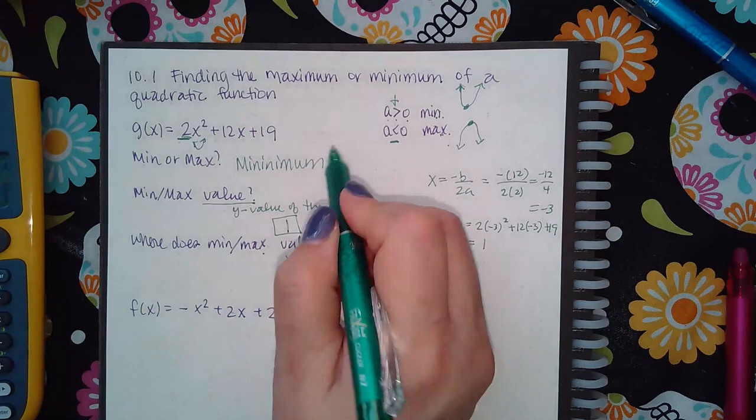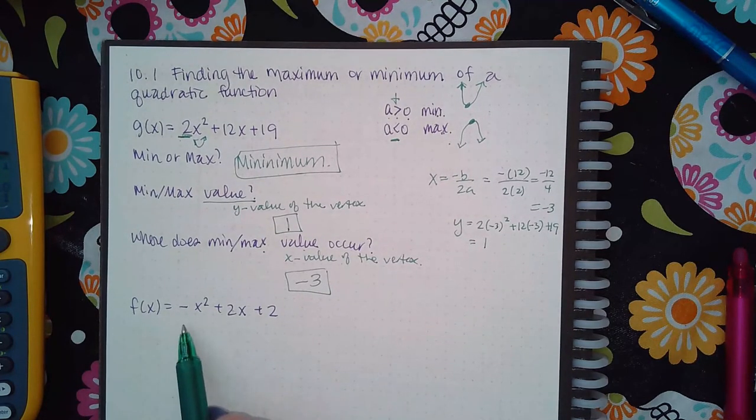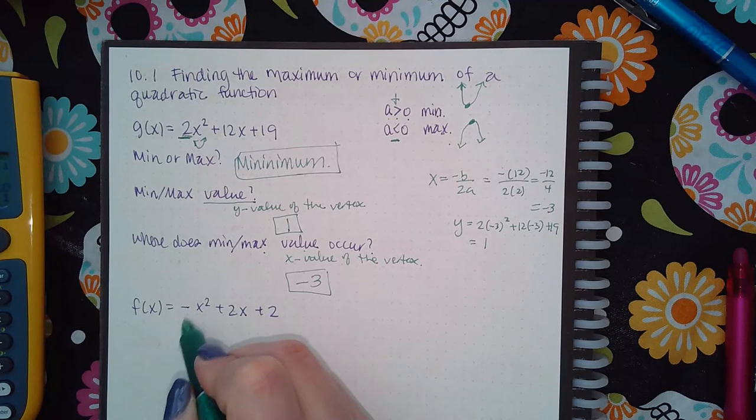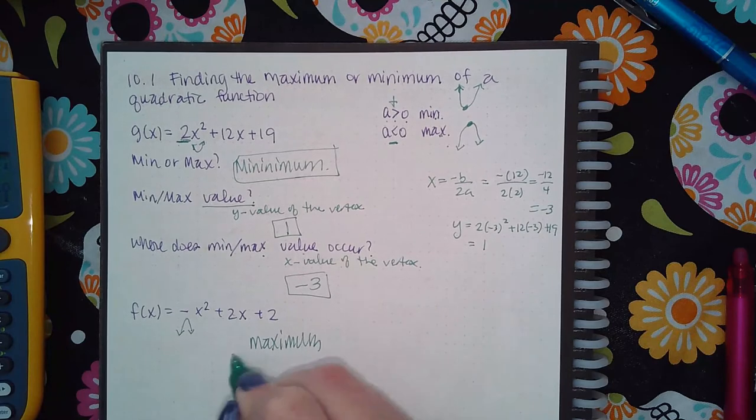So then the y value of my vertex is 1 and the x value of my vertex is negative 3, and the answer up here was minimum. Similarly, if there's a negative, because there's a negative, this one's going to be going downward so I'm going to say this one has a maximum.